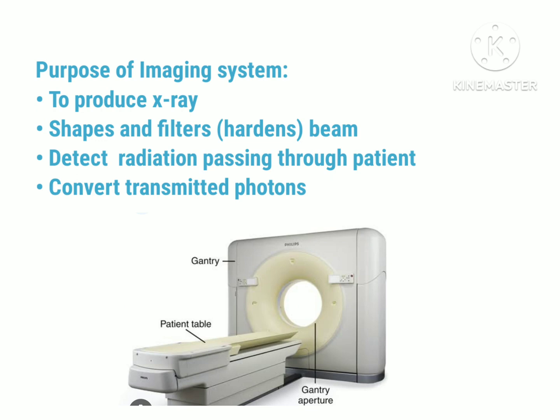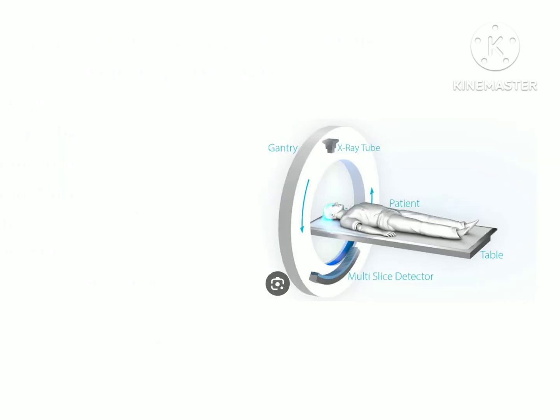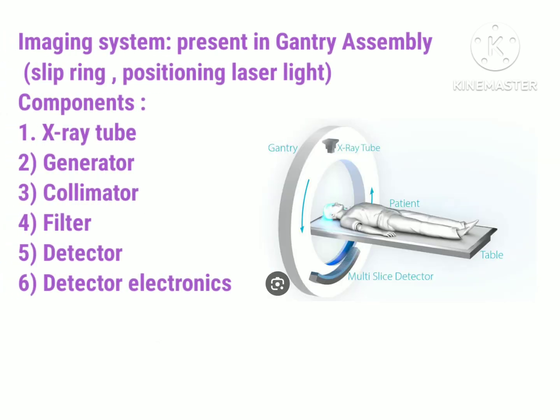Now let's discuss the imaging system. The imaging system helps to produce x-rays, it shapes and filters the x-ray beam, it detects or measures the radiations being passed through the patient, and it converts the transmitted photons. The imaging system is present in the gantry assembly, and the components present in the gantry assembly are: the x-ray tube, generator, collimator, filter, detector, and the detector electronics known as DAS.